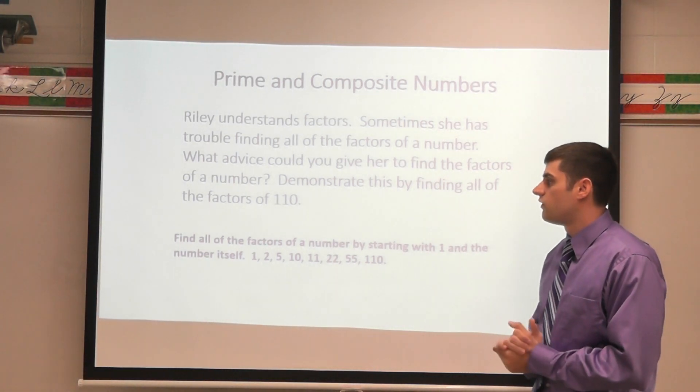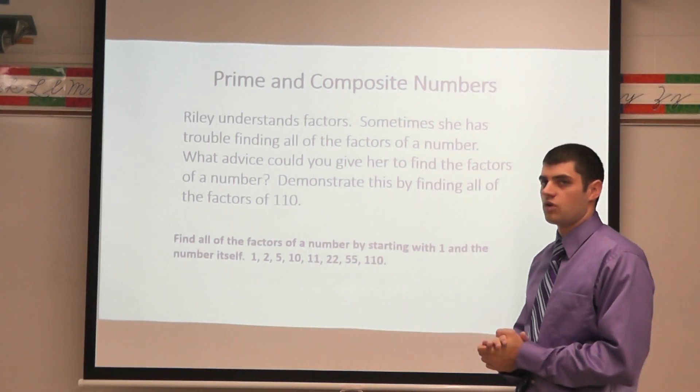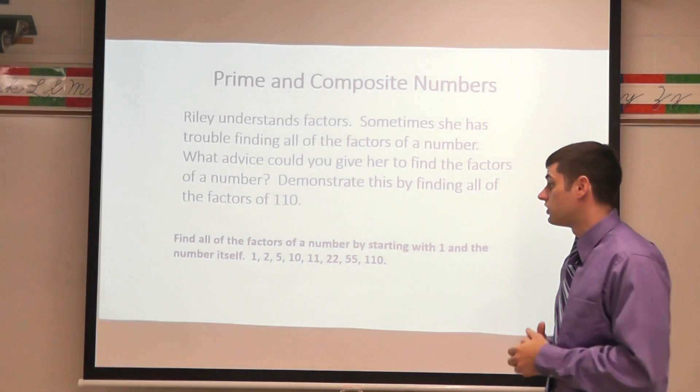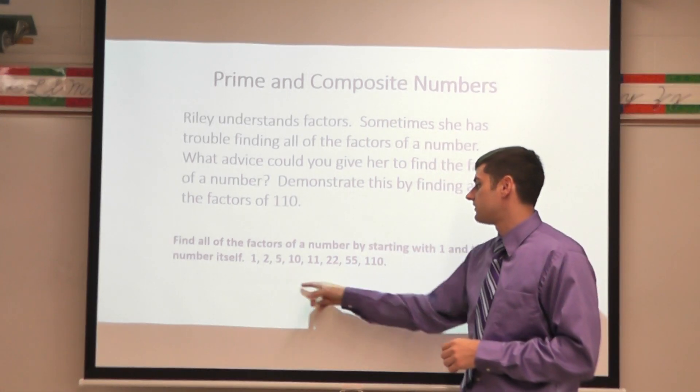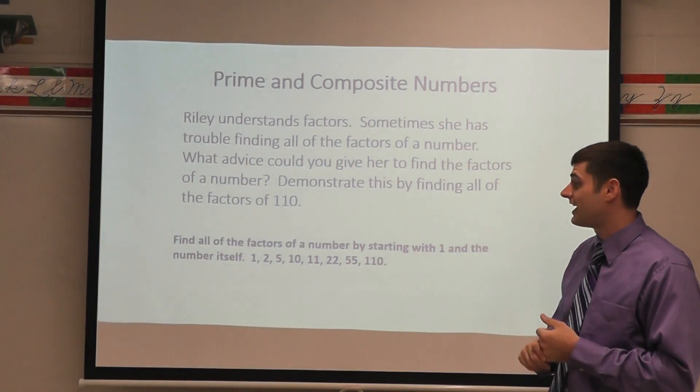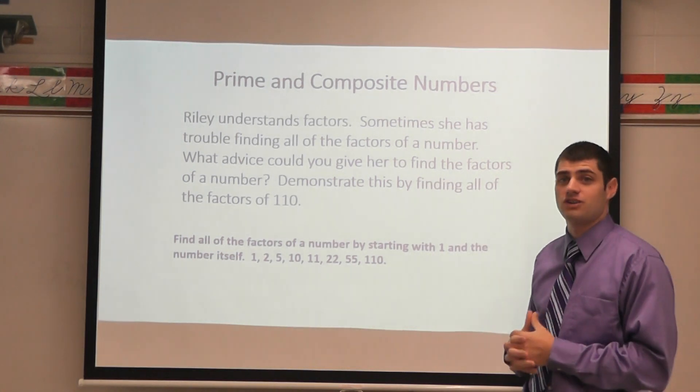Then I can look at four. Will four divide evenly in? Four won't work. Well I know 110 ends in a zero so I know five would go into it. So I know that five times 22 would leave me with 110. So five and 22 are a factor pair.